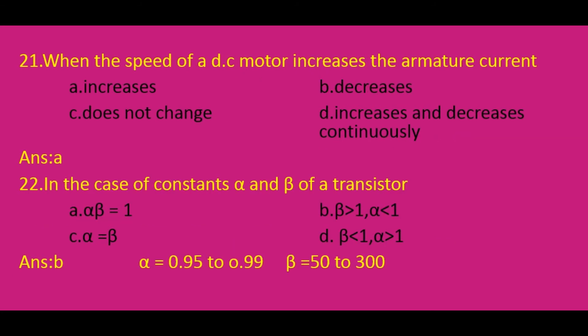When the speed of a DC motor increases, the armature current: the armature is one part of the DC motor. When we increase the speed of the DC motor, the armature current also increases. So the correct option is A.